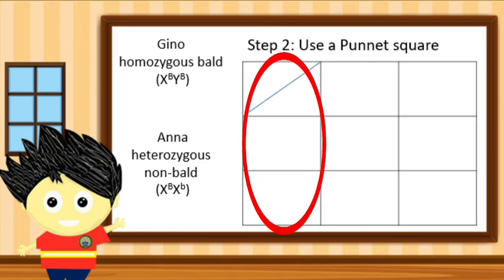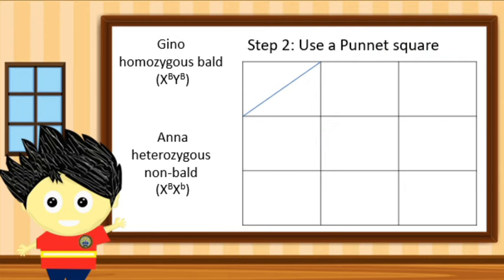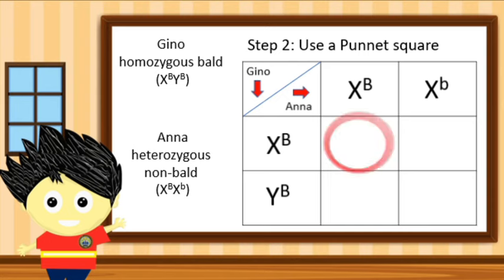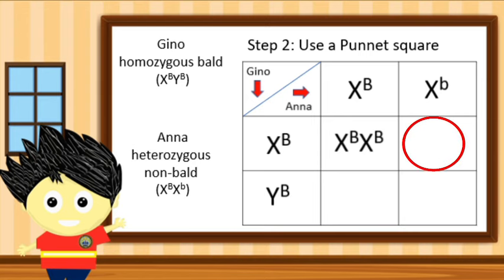Gino has X and Y chromosomes with a superscript of identical capital letter B, representing a homozygous bald trait. Meanwhile, Anna has identical X chromosomes with a superscript of capital letter B and small letter b. In the first box of our Punnett Square, we get identical X sex chromosomes with a superscript of identical capital letter B, representing a female bald carrier. In the second box, we get identical X chromosomes with a superscript of capital letter B and small letter b — gametes for a female non-bald trait carrier.